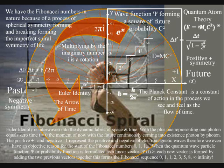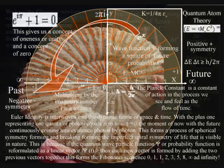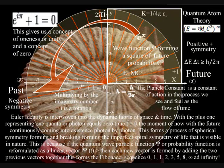In this theory, we have a universal process of spherical symmetry forming and breaking that forms the spiral of life as time unfolds, photon by photon, or moment by moment. When the spherical symmetry is broken, it forms the imperfect spiral symmetry of life that is visible in nature.